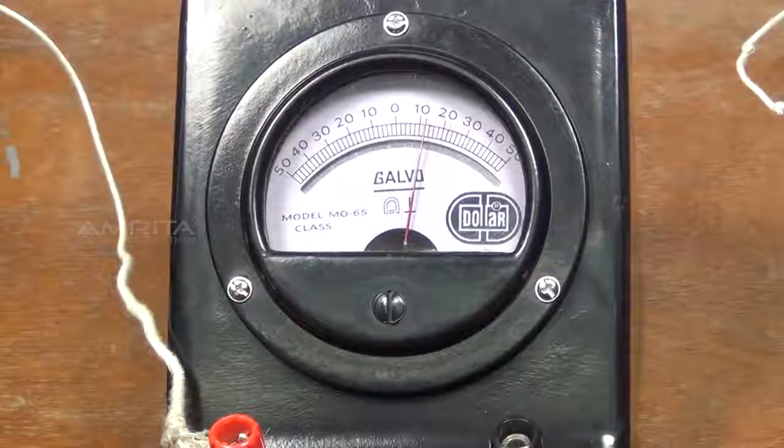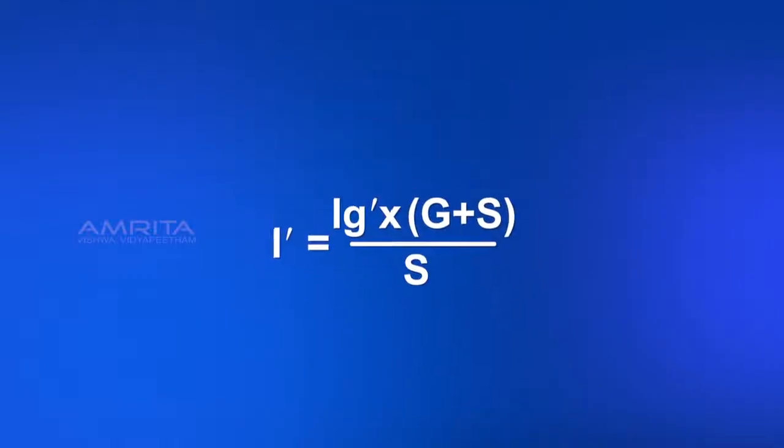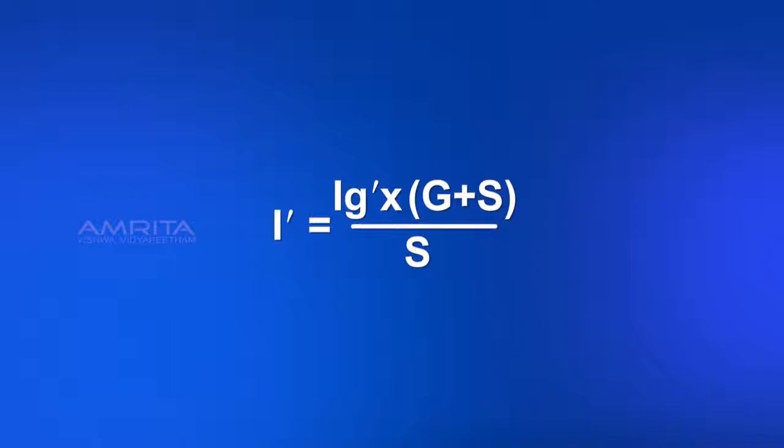Now, the current through the converted ammeter is calculated using the relation I' equals IG' times (G plus S) divided by S.